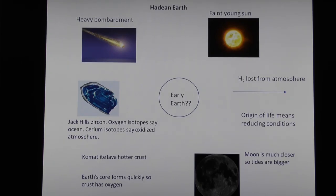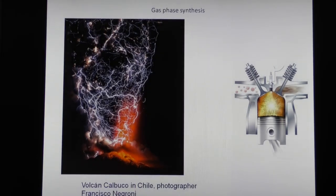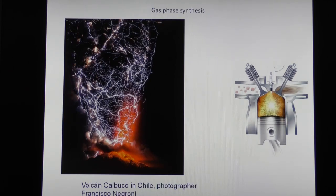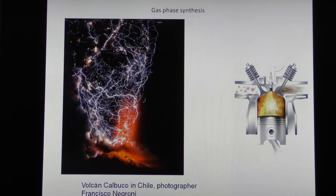So the Hadean Earth is really up in the air as to what it looked like. Looking at the gas phase — the atmosphere — here's a volcano in Chile. You can see there's a lot going on: look at that lightning. There's a lot of chemical synthesis going on there. This is also a cylinder out of a car engine — another gas phase reactor making a lot of the same things. You'd be surprised what comes out besides carbon dioxide and water.